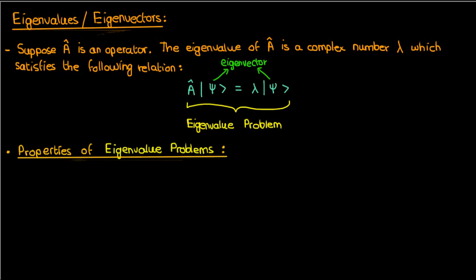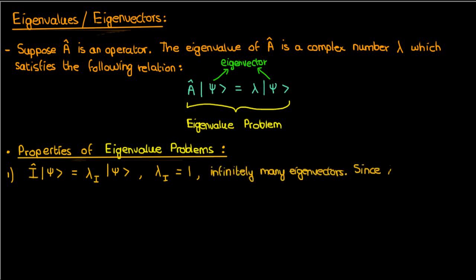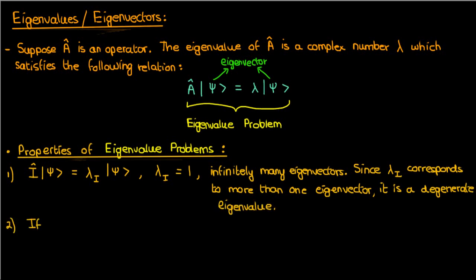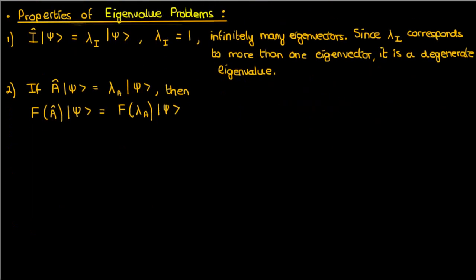The first property involves the eigenvalue problem on the identity operator. Since the identity operator just spits out the same vector it operated on, the eigenvalues are always 1 and the eigenvectors are every single vector in the vector space — in other words there are infinitely many eigenvectors. Because the eigenvalue lambda_i corresponds to more than one eigenvector, we call it a degenerate eigenvalue. The second property is that if operator a-hat satisfies an eigenvalue problem, then an operator involving a function of a-hat will satisfy the same eigenvalue problem with the same eigenvectors but the eigenvalue changed according to that function F.